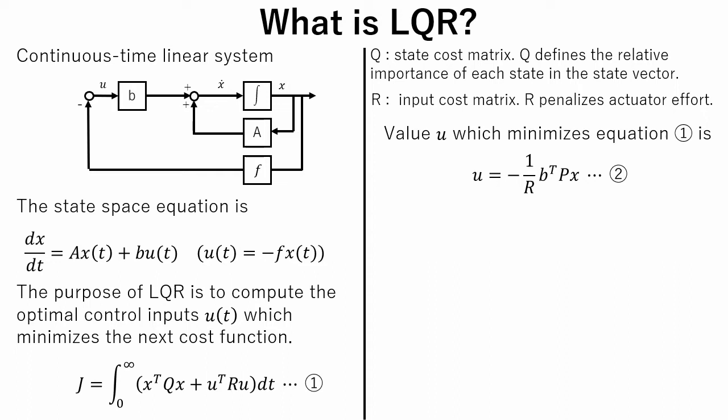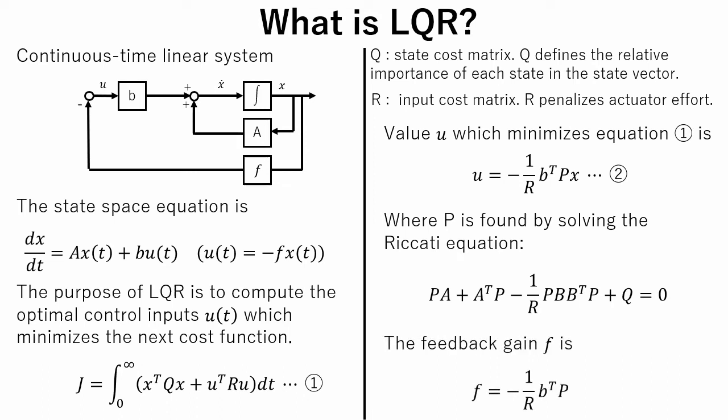Value U which minimizes equation 1 is described like this. Here P is found by solving the Riccati equation. In this tutorial we will not discuss how to solve this equation, since there is a lot of reference material on the internet. Using equation 2, feedback gain is denoted like this.